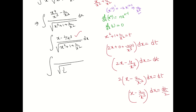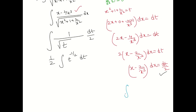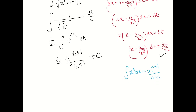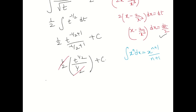Substituting, the denominator becomes √t and the numerator (x - 2/x³) dx equals dt/2. So the integral becomes (1/2) ∫ t^(-1/2) dt. Applying the power rule — integration of t^n is t^(n+1)/(n+1) — we get (1/2) × t^(1/2)/(1/2), and the (1/2) factors cancel, giving √t.